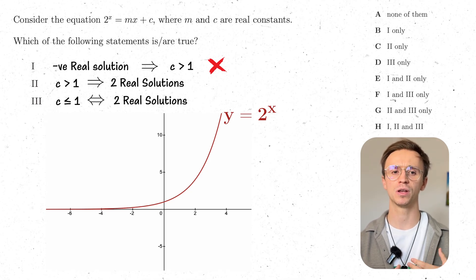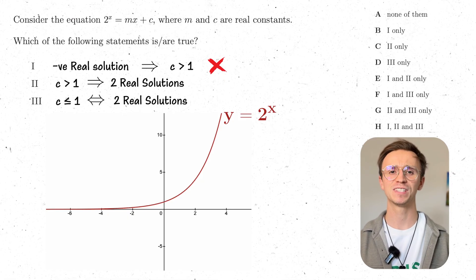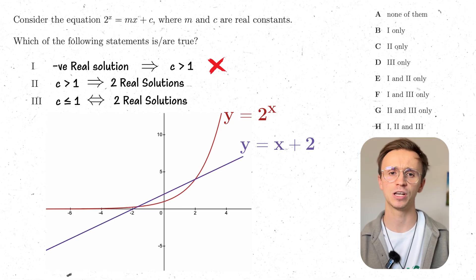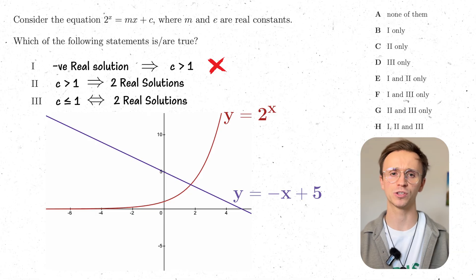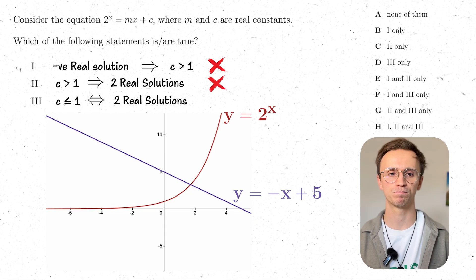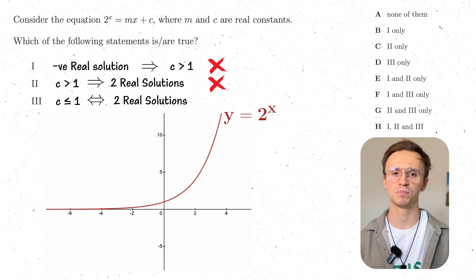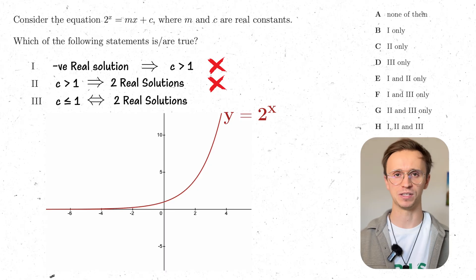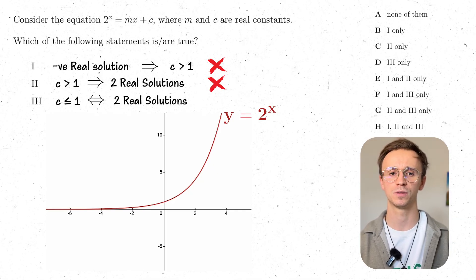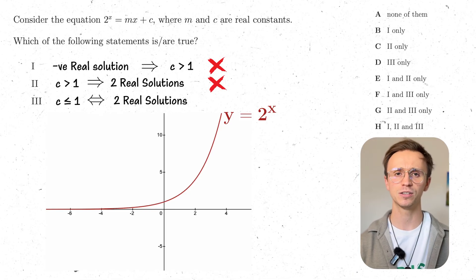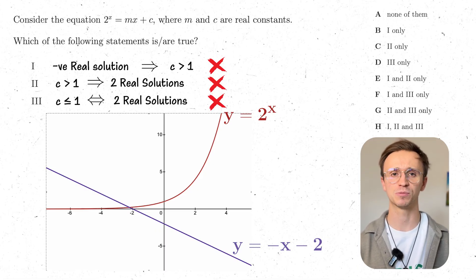Moving to statement two: assuming c > 1, we need two distinct real solutions. A line with positive gradient and c > 1 gives two distinct real solutions. However, with a negative gradient and c ≥ 1, there's only one solution. So statement two is also incorrect — disproved by counterexample. For statement three, assuming c ≤ 1, drawing a negative gradient line with y-intercept -2 gives only one solution. So statement three is also disproved by counterexample.